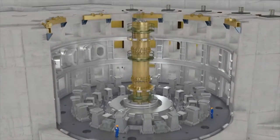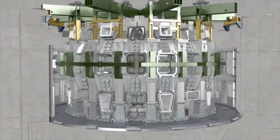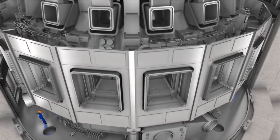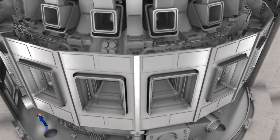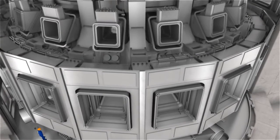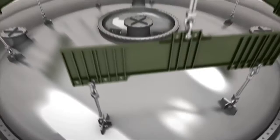The complete assembly of the ITER machine will take about four years. Following main assembly and alignment of the vacuum vessel, the second assembly phase, the installation of in-vessel components, will proceed with specialized remote handling devices.